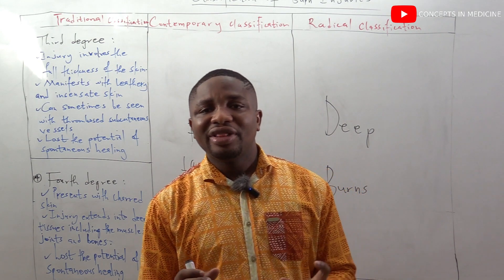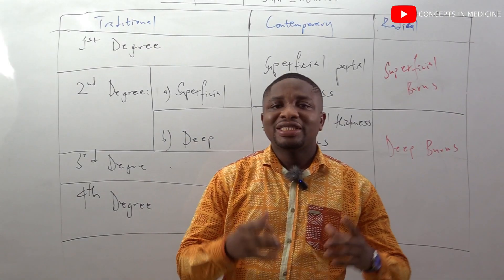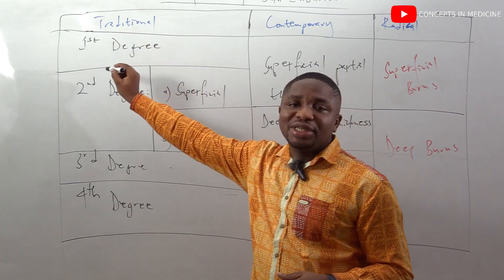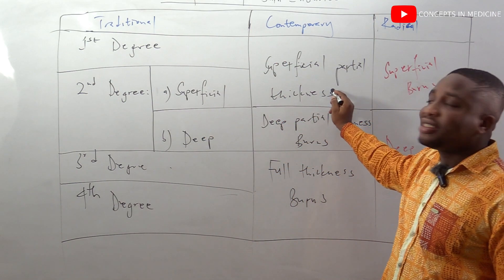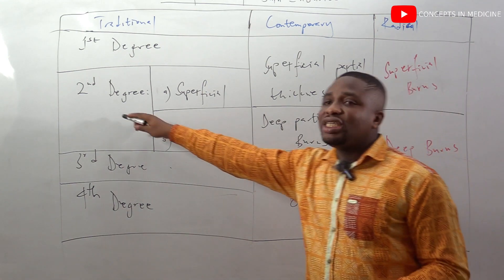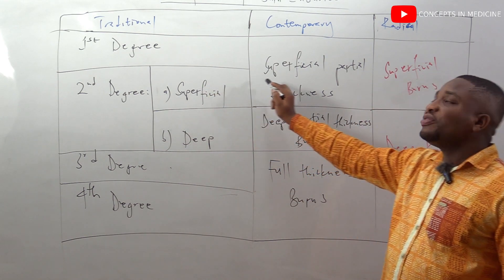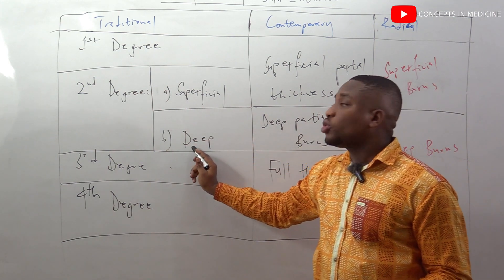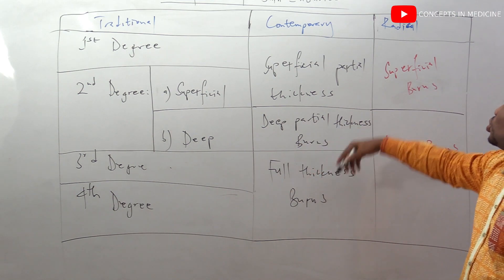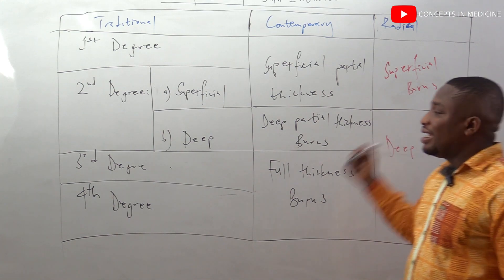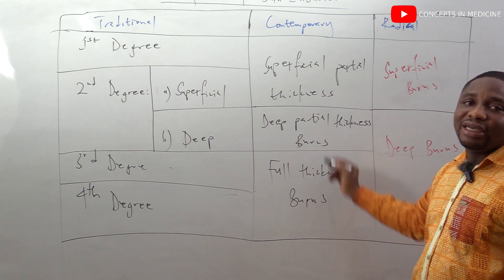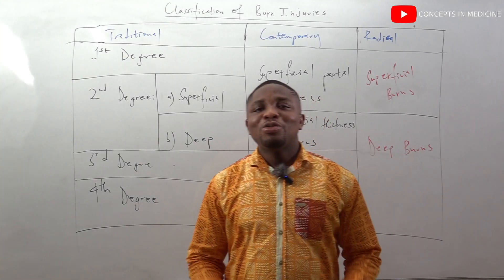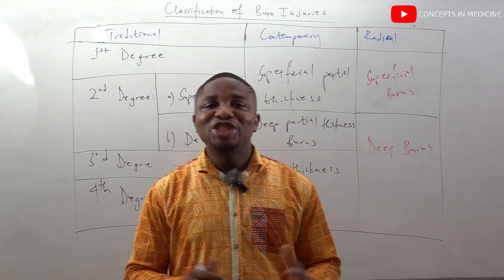Let's summarize everything into a brief format. In the traditional classification: first degree corresponds to contemporary superficial partial thickness and radical superficial burns. Second degree superficial corresponds to contemporary superficial partial thickness and radical superficial burns. Second degree deep corresponds to contemporary deep partial thickness and radical deep burns. Third and fourth degree both correspond to contemporary full thickness burns and radical deep burns.